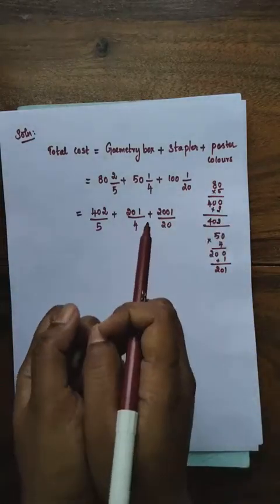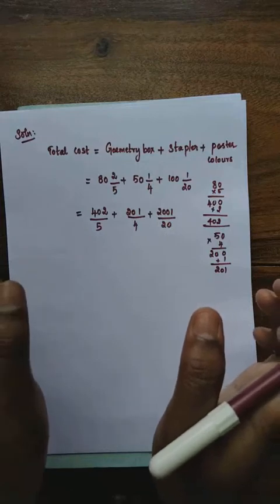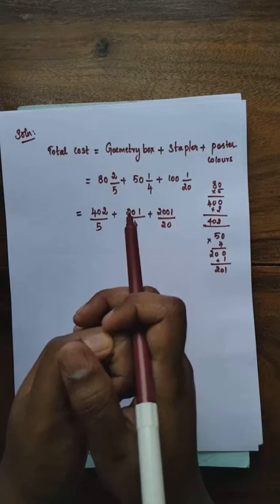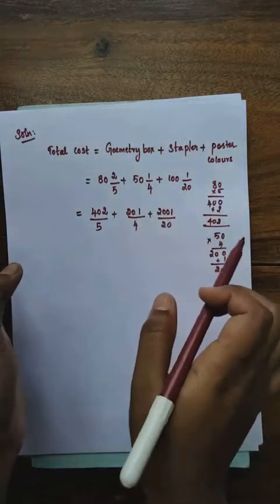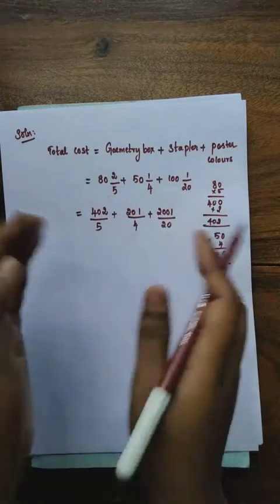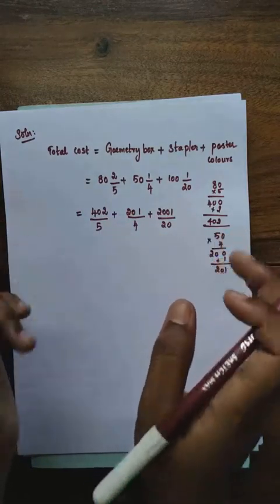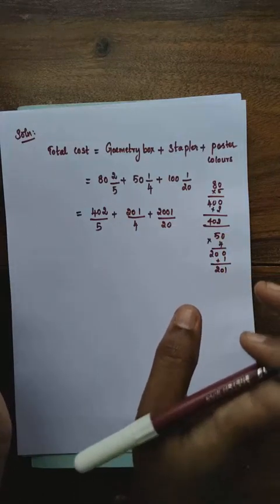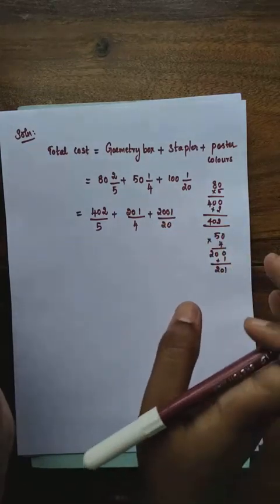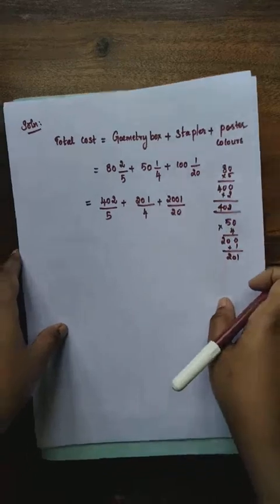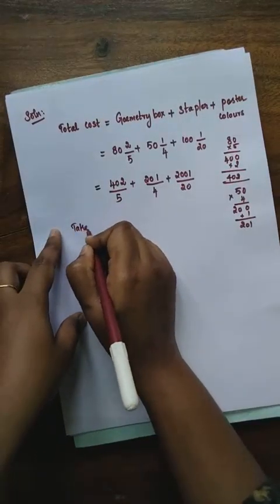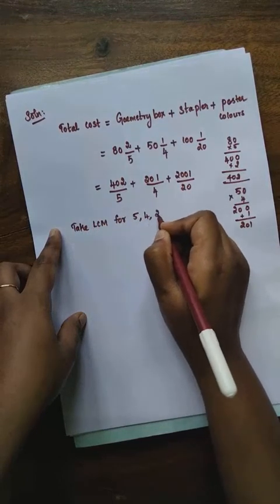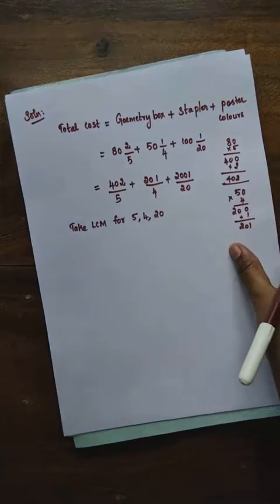The denominators are not all the same, so it is an unlike fraction. For adding unlike fractions, we need to make all the denominators the same. For that, we are going to take the LCM. Take LCM for 5, 4, and 20.